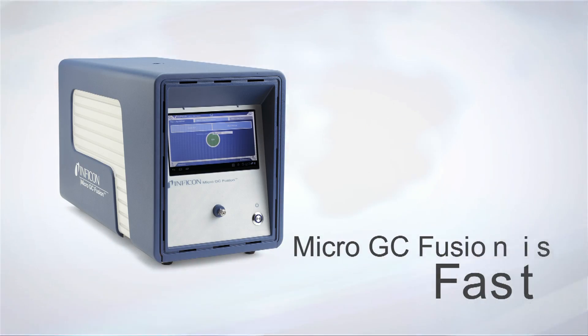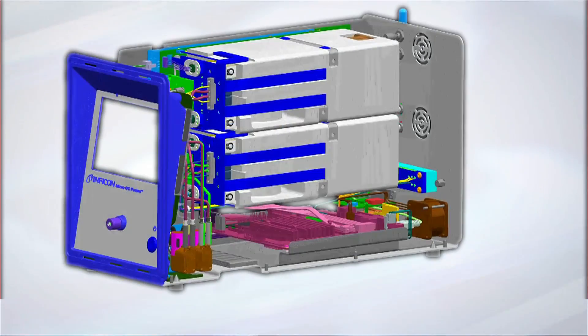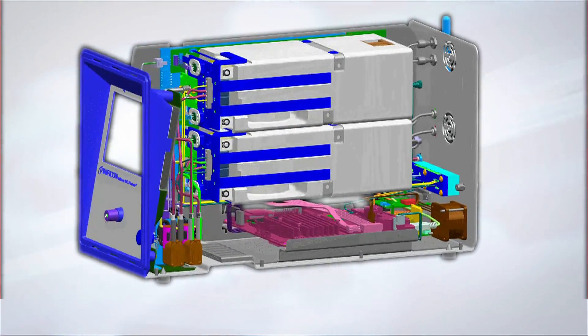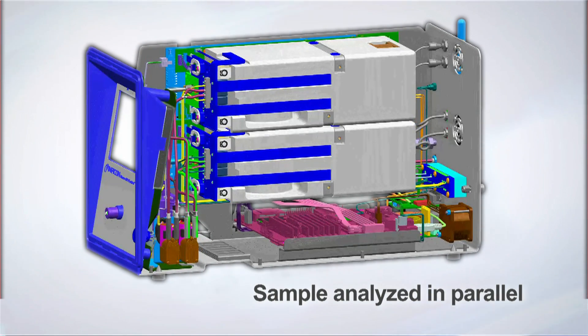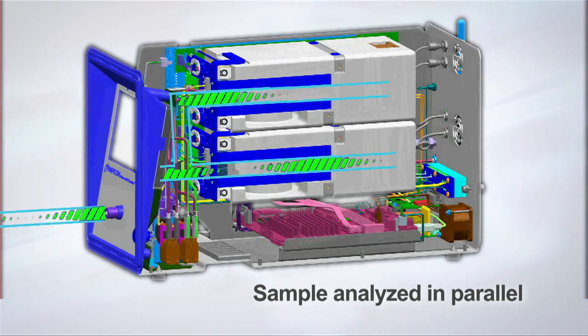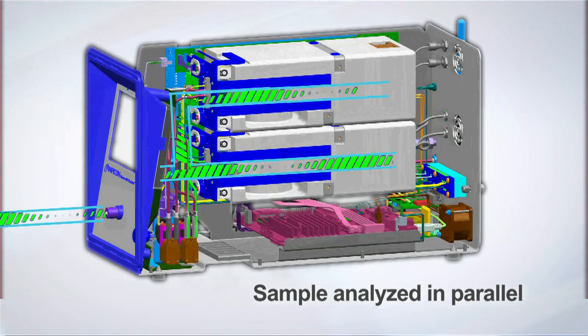Micro GC Fusion is fast. Using a modular architecture, Fusion allows the sample to be analyzed in parallel by multiple GC modules. Each module is optimized to measure at maximum speed, providing fast and accurate results.